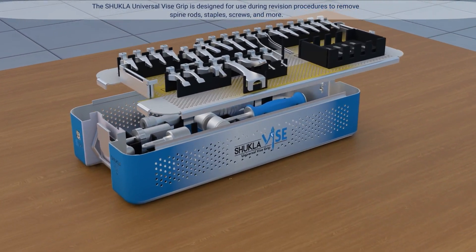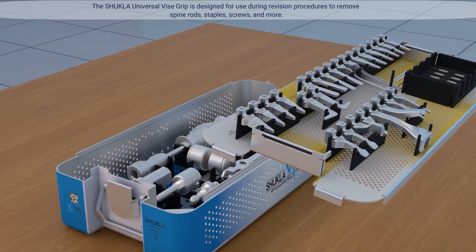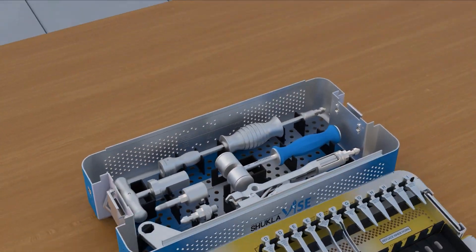The Shukla Universal Vice Grip is designed for use during revision procedures to remove spine rods, staples, screws, and more.